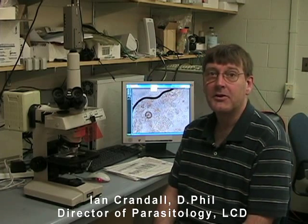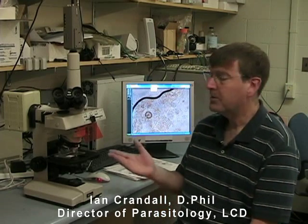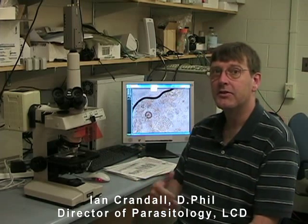Basically the way parasitology works in most laboratories is you prepare your sample, you then come along and look at the sample, and what you hope to do is look for certain items that are in there. They're common — for instance, worm eggs, nematodes, trematodes, cestoids, things like that.